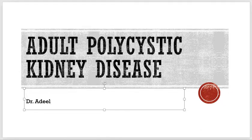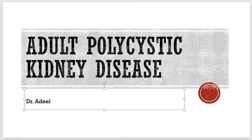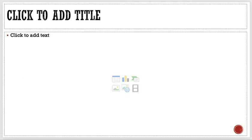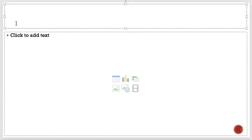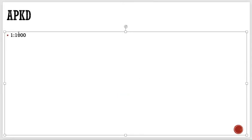There are certain conditions in which cyst formation in the kidneys occurs as part of some syndromes. The most important topic is adult polycystic kidney disease. APKD is a common condition with a prevalence of 1 in 1000 people. It is an inherited disorder and that inheritance is autosomal dominant.